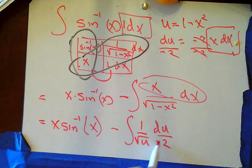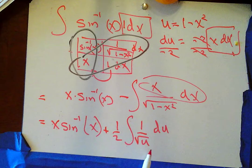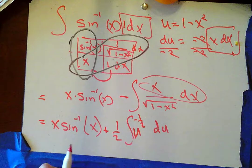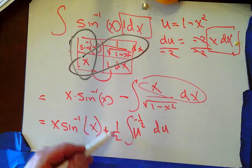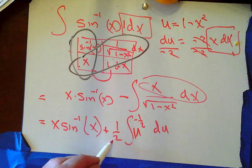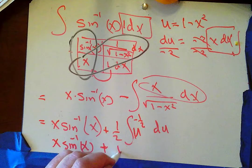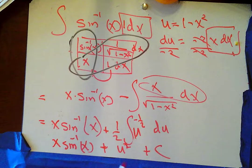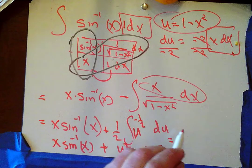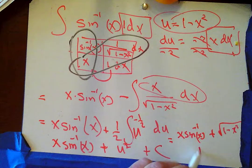Now I have x sine inverse x minus the integral of 1 over square root of u times du over negative 2. Pulling out the negative 2 — negative times negative is positive — I get plus 1/2 integral of u to the negative 1/2 du. The antiderivative is u to the 1/2, so my answer is x sine inverse x plus u to the 1/2 plus C. Replacing u with 1 minus x squared, the final answer is x sine inverse x plus square root of 1 minus x squared plus C.